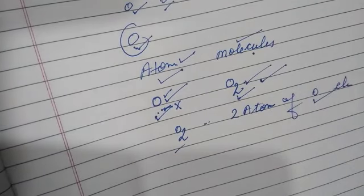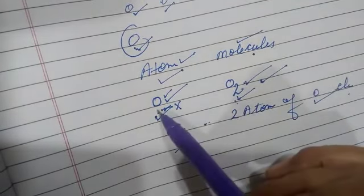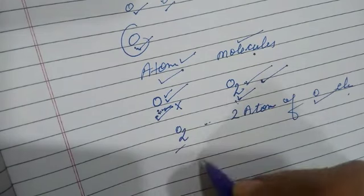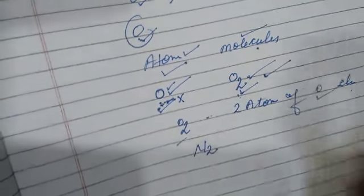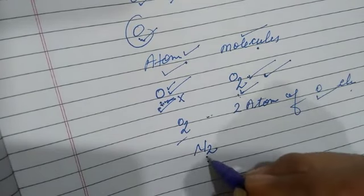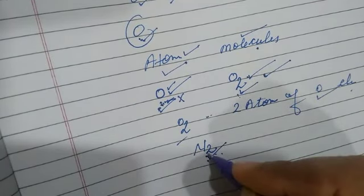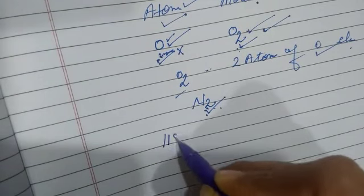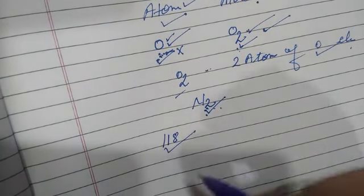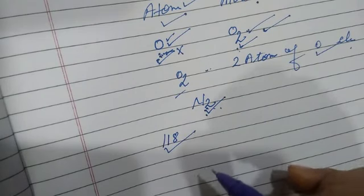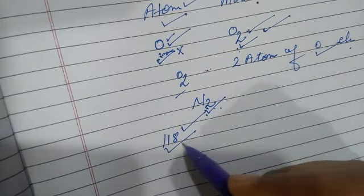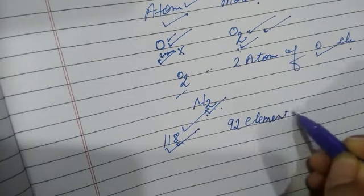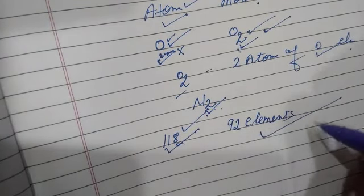The oxygen atom has all the properties of the oxygen element. Similarly, the atom of nitrogen has the properties of the nitrogen element, not of any other element. There are 118 elements known to us to date, out of which 92 elements are found occurring in nature.